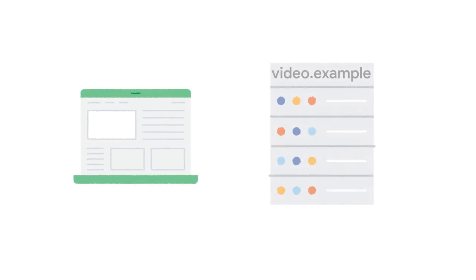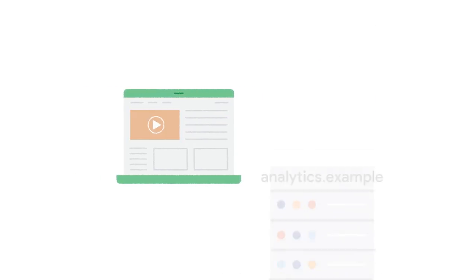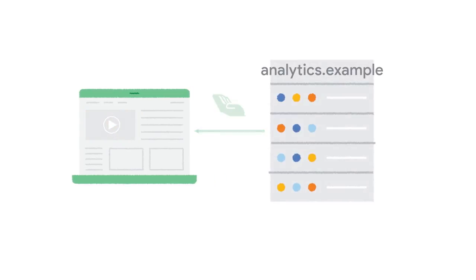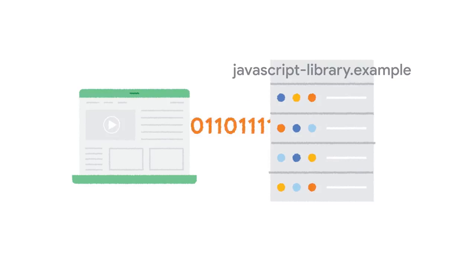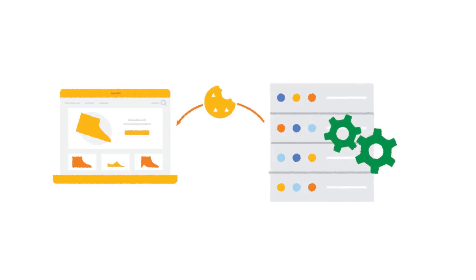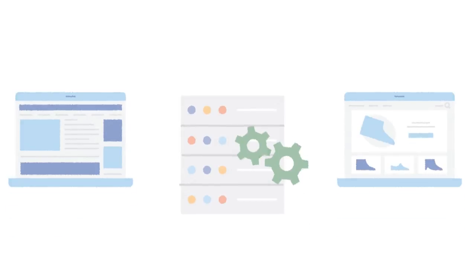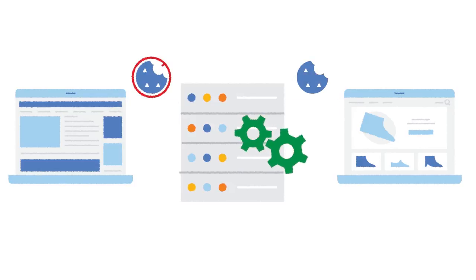Web pages include content from multiple origins, not just their own servers. For example, a website might use embedded video, and many sites include code from different origins, such as analytics or JavaScript libraries. Historically, a third party might also want to correlate the activity of a user across sites by using mechanisms such as third-party cookies. Of course, browsers are moving towards privacy models that restrict access to tracking user identity across sites.